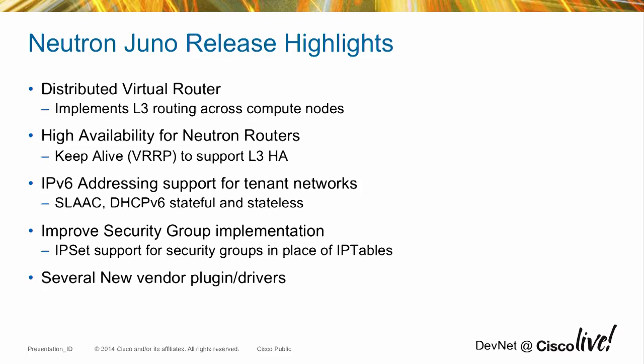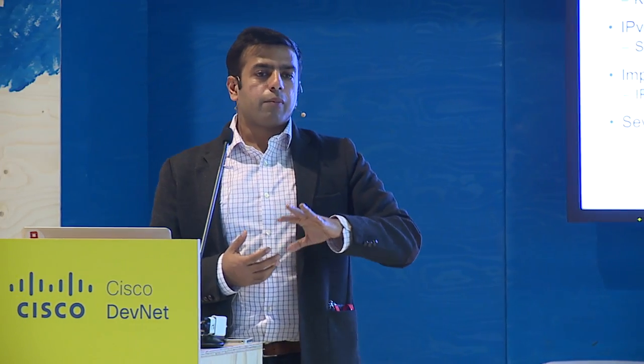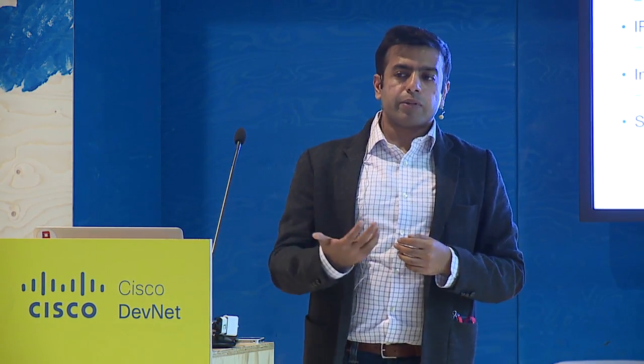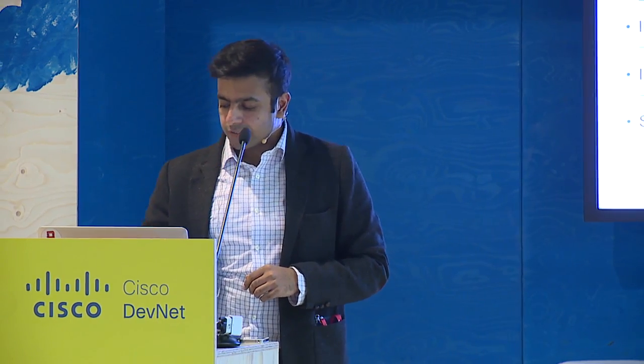Here are some highlight features from the latest Juno release in November. Distributed virtual routers now allow you to distribute virtual routing functionality across all compute nodes — previously it all went through a single network node, causing bottlenecks. Cisco is also providing hardware enhancements for layer 3 routing. For IPv6, we support SLAAC and DHCPv6 stateful and stateless, and going forward we're supporting prefix delegations so admins can define a global unique address range for tenants. The modular architecture allows multiple backends and other vendors to contribute device plugin drivers in Neutron.